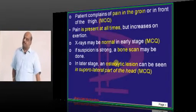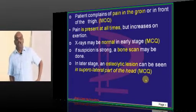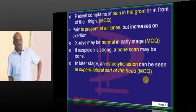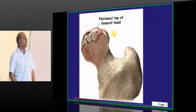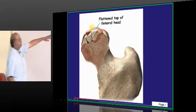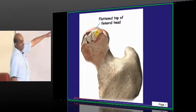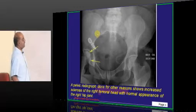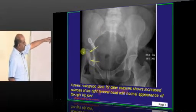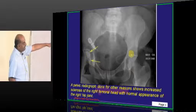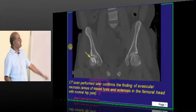In the late stage, there can be osteolysis which develops in the superolateral part of the head. The superolateral part of the head is another important finding in avascular necrosis. This is a typical flattened top of the femoral head — the superolateral location is the classical location. This is another example on a pelvic radiograph where you can see increased sclerosis involving the superolateral aspect.